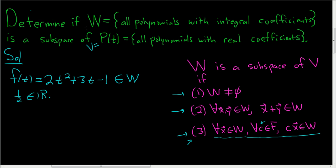If W were to be a subspace, then the scalar product 1/2 times F(t) should also be inside W. But if we look at 1/2 times F(t), this is 1/2(2t² + 3t - 1). We can distribute the 1/2: 1/2 times 2 is 1, so we get t². 1/2 times 3 is 3/2, and 1/2 times -1 is -1/2.